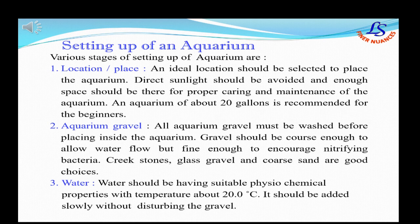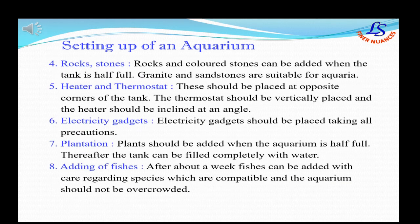Before you set up an aquarium, look for the following factors. First is the location — it should be in a suitable place where direct sunlight does not reach. Aquarium gravel is important, and water should have suitable physical and chemical properties. Rocks and colored stones can be added when the tank is half full; granite and sandstones are suitable. Heater and thermostat are a must, and electrical gadgets should be placed with all precautions. Plantation should be done when the tank is half full, and fishes should be added about a week after setting up the aquarium.